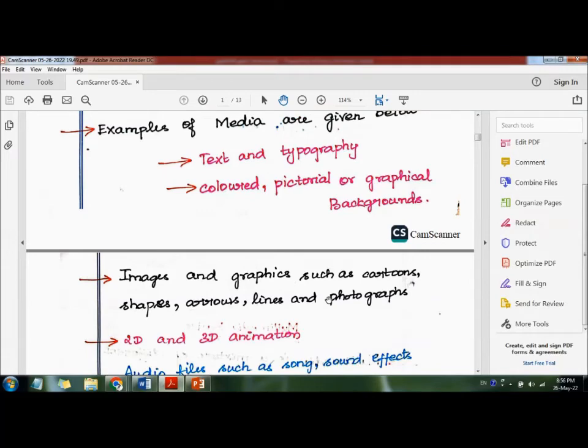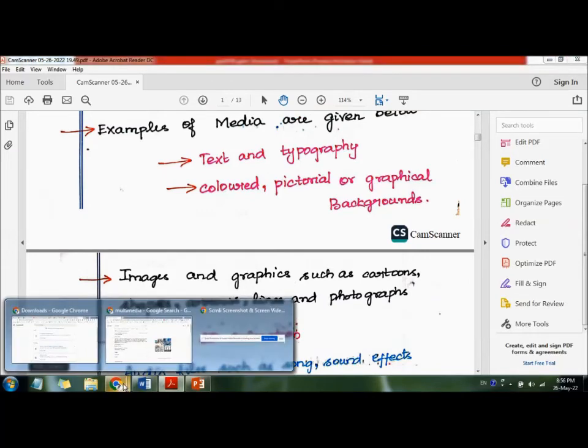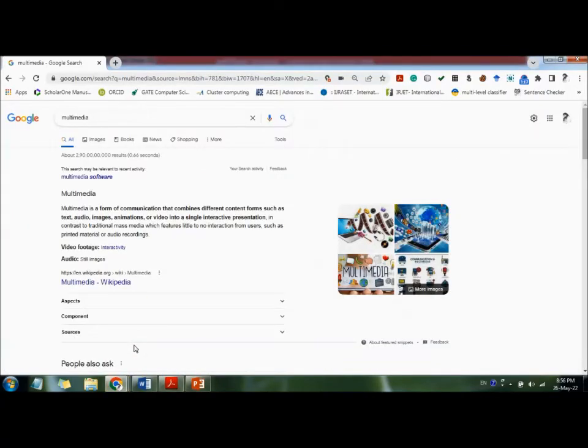We can see the web page, we can see the text, then pictorial, that is diagram, and then animation. Suppose we can see the web page, we can see the ads.